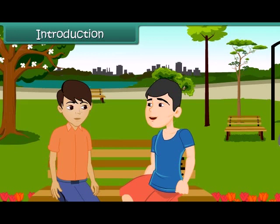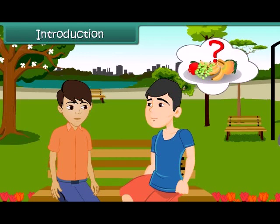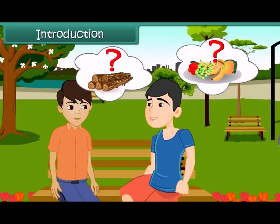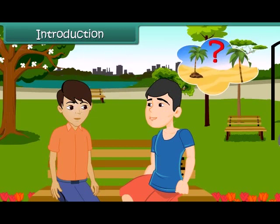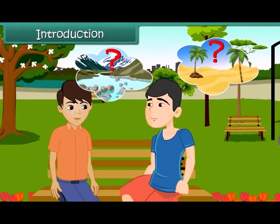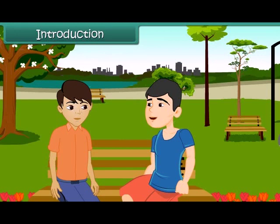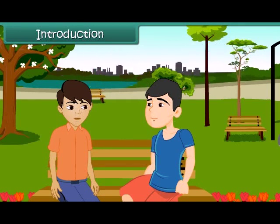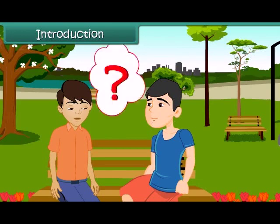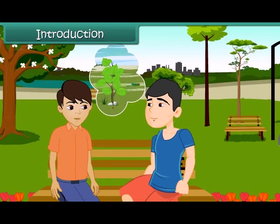She asked what they are which give us fruits, they give us wood, which can grow on land as well as in water, which are found in homes as well as in forests. It's simple, dear. They are called plants.